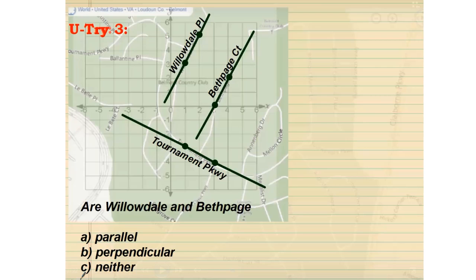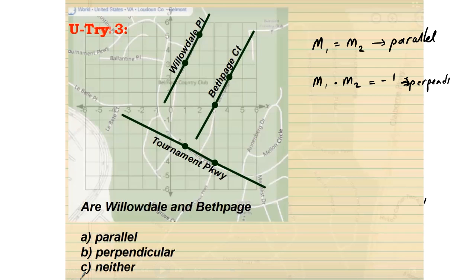By looking at the slopes of the lines, we can also determine whether two lines are parallel, perpendicular, or neither. If the slopes of two lines, m1 and m2, are exactly the same, then the two lines are parallel. If the slopes are negative reciprocals of each other, then m1 times m2 equals negative 1 — for example, 3 over 2 and negative 2 over 3 give a product of negative 1, so those lines are perpendicular. If two lines are neither parallel nor perpendicular, then they are just intersecting — that is the neither case.